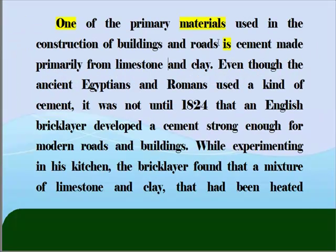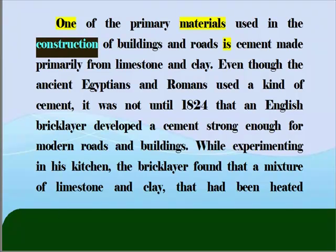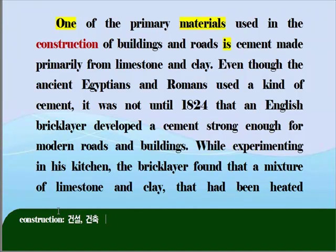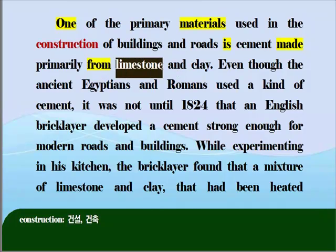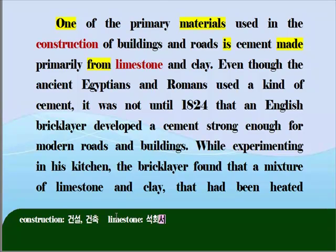'one of' 확인됐죠? 'used'는 과거분사로 쓰였습니다. 'construction', 건설, 건축, 이러한 뜻이 있는 거 여러분들 알고 있죠? 'buildings', 건물과 도로를 건축할 때 사용되는 'primary materials', 주된 재료의 한 가지가 바로 'cement'이다. 그런데 'cement' 뒤에 'made'가 뒤에서 수식해주고 있습니다. 과거분사입니다. 'made from'을 연결시켜서 본다면 무엇으로 만들어진, 이렇게 볼 수 있겠죠? 'limestone', 석회석이라고 하는 뜻이죠? 'clay', 진흙입니다. 'primarily', 주로 석회석과 진흙으로 주로 만들어진 'cement'이다.